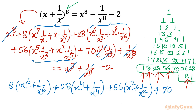The right hand side is minus 2. So if I take everything to the left hand side it becomes plus 2, equal to 0. Now I will give a substitution: I will consider x^2 + 1/x^2 equal to A.